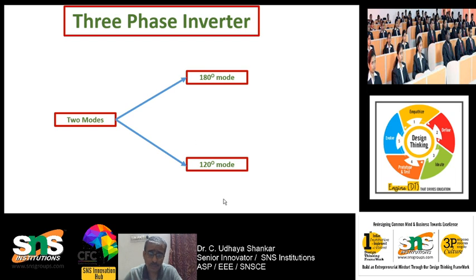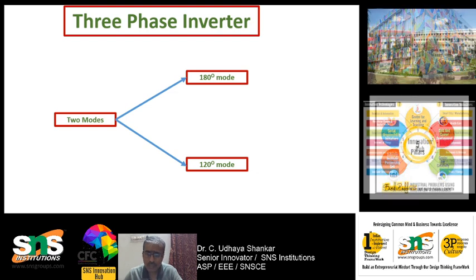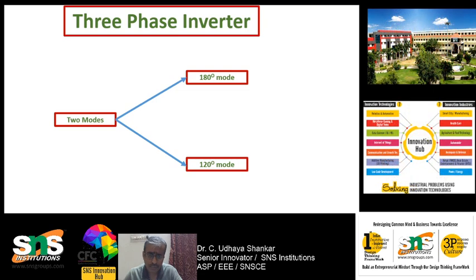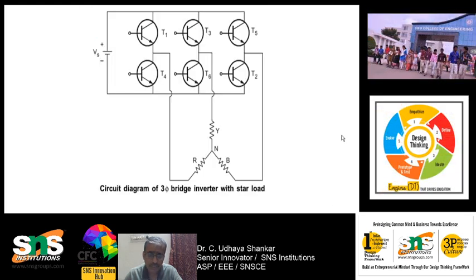Nowadays people prefer the 120-degree mode of conduction because safety is more important when compared to the cost or investment. So let us discuss both 180-degree mode and 120-degree mode of conduction in the three-phase inverter circuit.